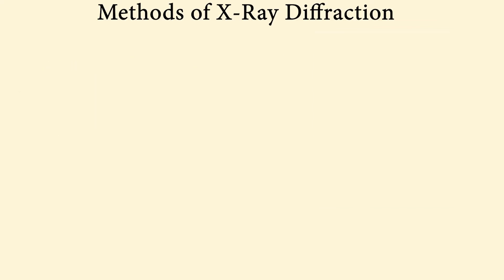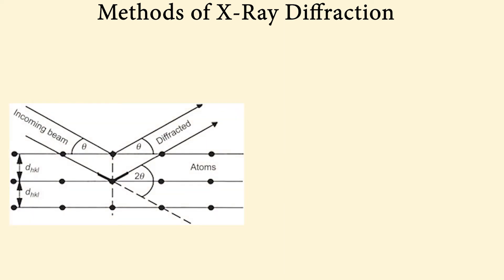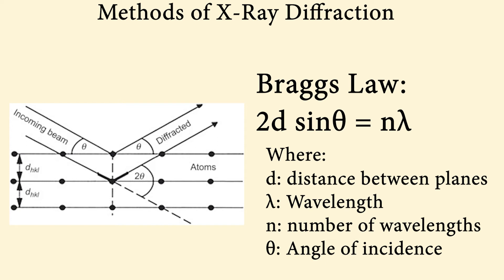Next we'll go over some of the different methods of X-ray diffraction. Single crystal X-ray diffraction is similar to all other kinds of X-ray diffraction, in that incident X-rays interact with the sample to produce constructive interference when conditions satisfy Bragg's law.